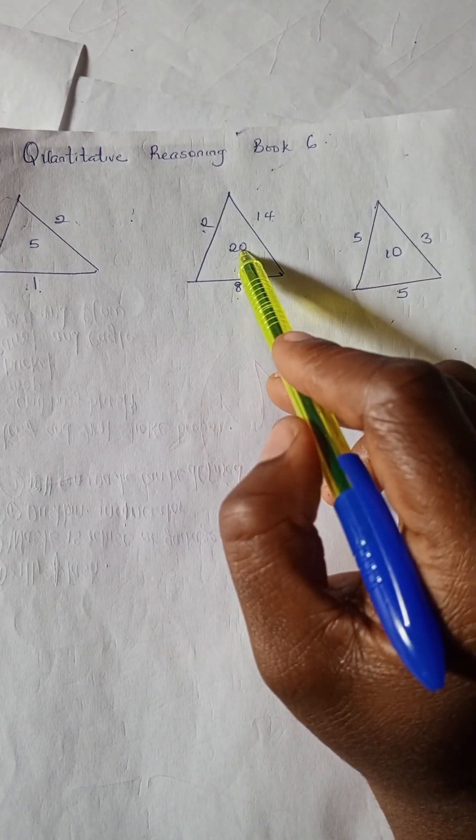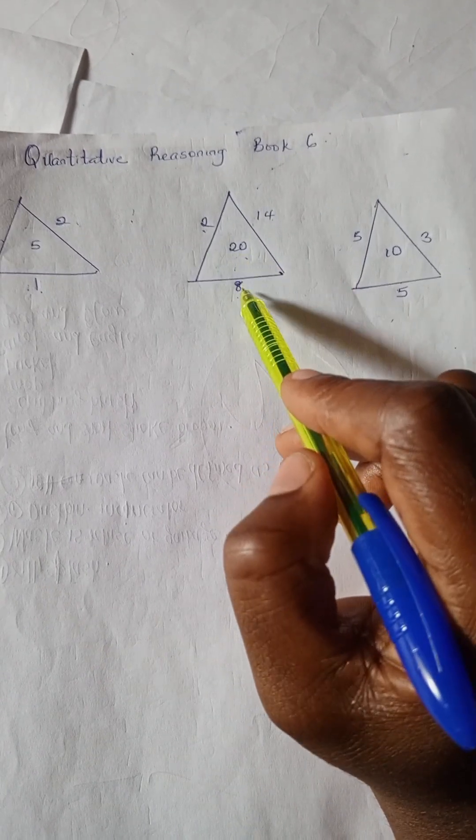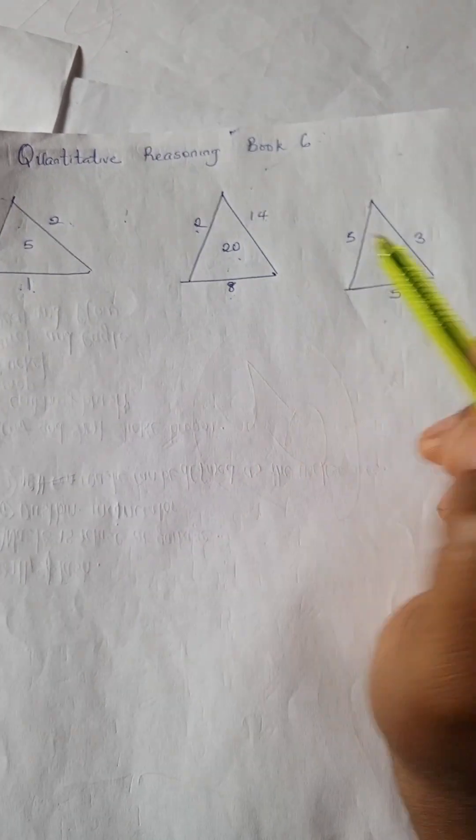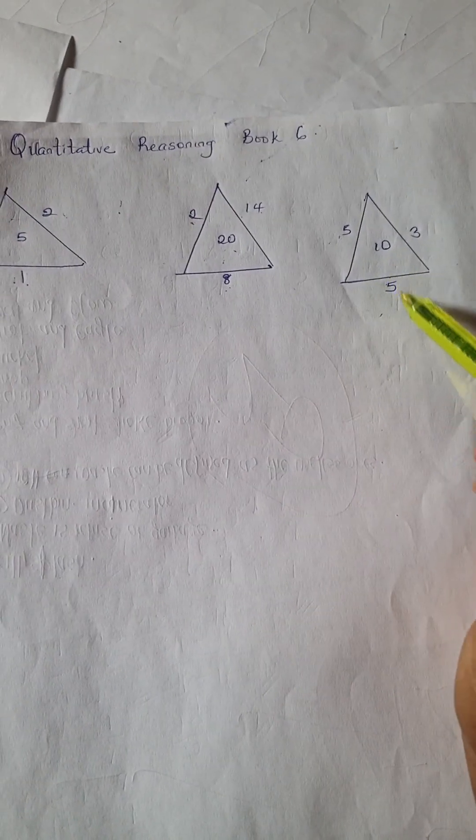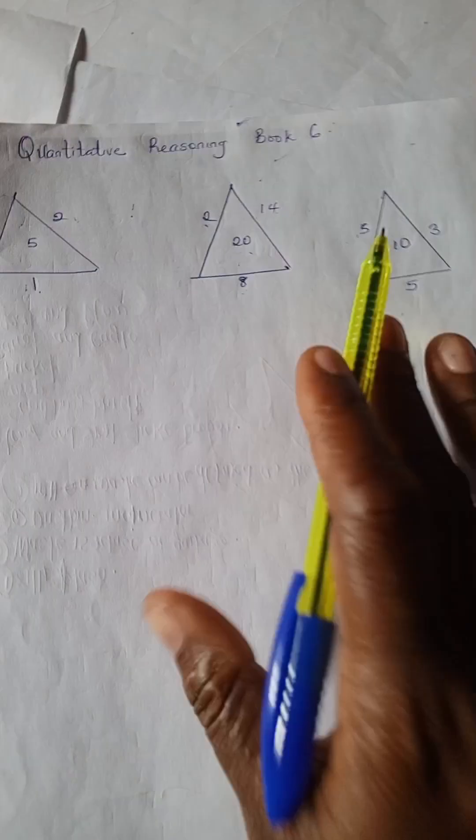2 times 14 is 28, and 20 plus 8 is 28. 5 times 3 is 15, and 10 plus 5 is 15.